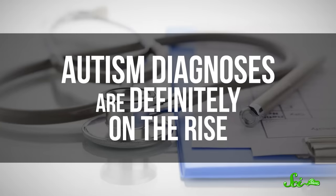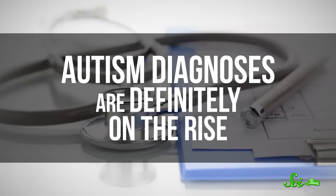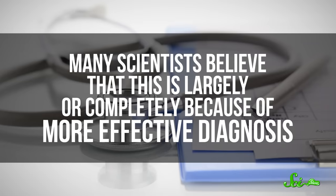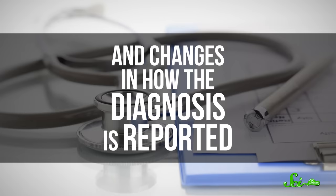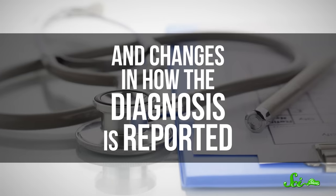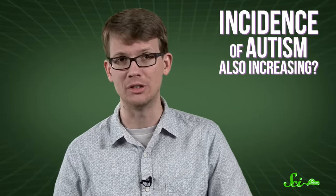First, let's discuss how we ended up with this imagined link between vaccinations and autism in the first place. Autism diagnoses are definitely on the rise. Now, many scientists believe that this is largely, or even completely, because of more effective diagnosis and changes in how the diagnosis is reported. So while the diagnoses of autism are increasing, we can't say for sure whether the incidence of autism is also increasing.